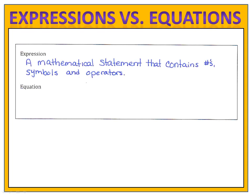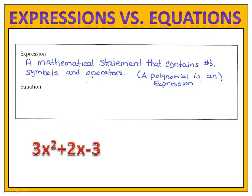An expression is simply a mathematical statement. It contains numbers, symbols such as variables, and operators such as addition, subtraction, and multiplication. Polynomials are examples of expressions — for example, 3x squared plus 2x minus 3, or 7x minus 4.